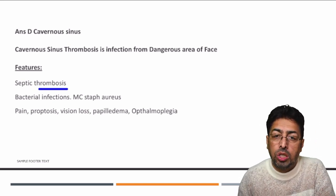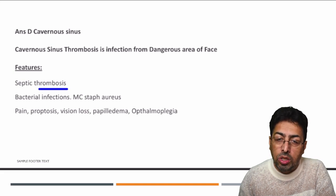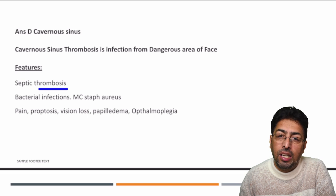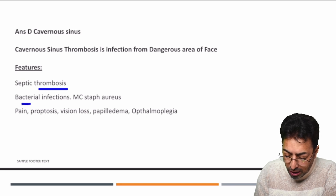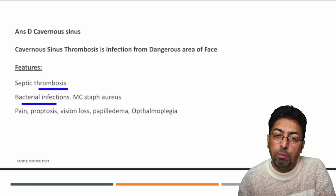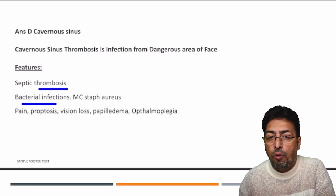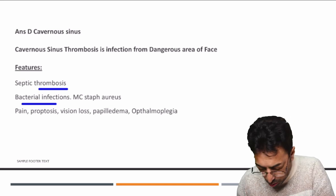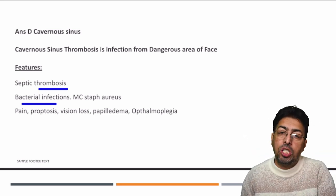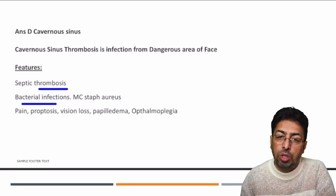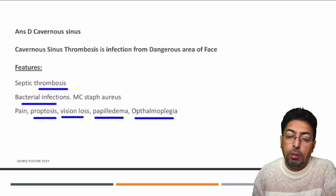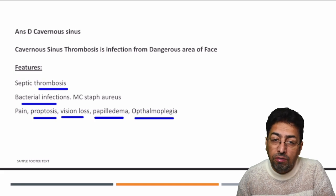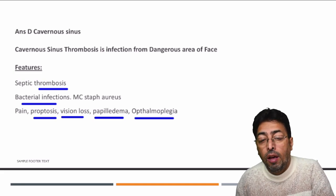Cavernous sinus thrombosis is a septic type of thrombosis. It can be insidious in onset and become clinically more severe over time. It is most commonly caused by bacterial infection — primarily from folliculitis — with the most common organisms being Staphylococcus and Streptococcus. Patients can present with inflammation and pain around the nose, proptosis, vision loss, papilledema, and ophthalmoplegia.